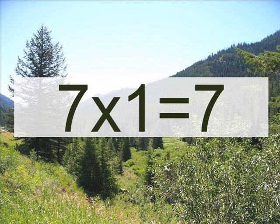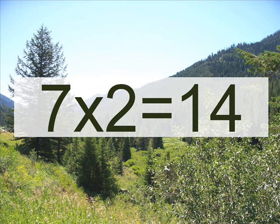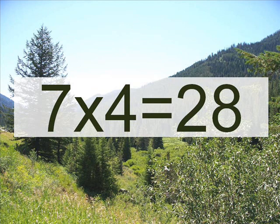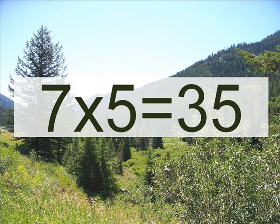7 ÷ 1 ÷ 7 x 1 ÷ 7 x 2 ÷ 14. Seven times two equals? Fourteen. Seven times three equals? Twenty-one. Seven times four equals? Twenty-eight. Seven times five equals? Thirty-five.